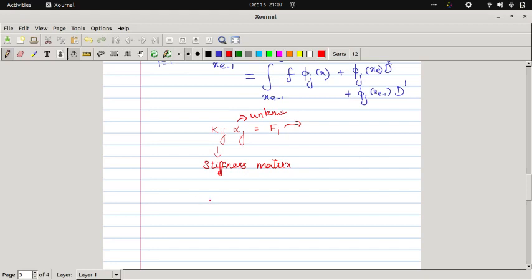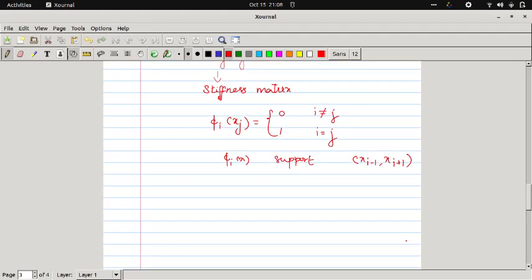Now we already know that phi_i of x_j equal to 0 whenever i is not equal to j, and 1 when i equal to j. And another thing, phi_i has the support at x_{i-1} to x_{i+1}. Remaining, the function value is always zero. That is our key point.